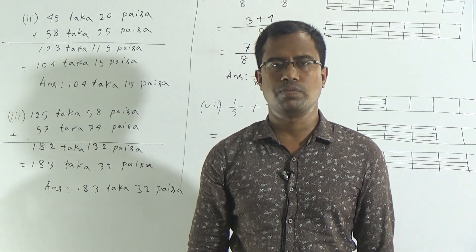In these two fractions the denominators are the same, so at the time of adding we take 8 as the denominator. We just add the two numerators: 3 plus 4 is equal to 7, and the denominator will be 8. So the answer will be 7 by 8.